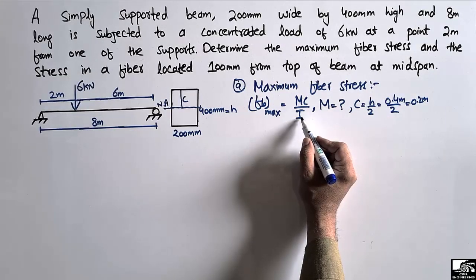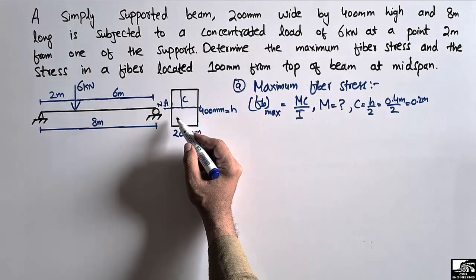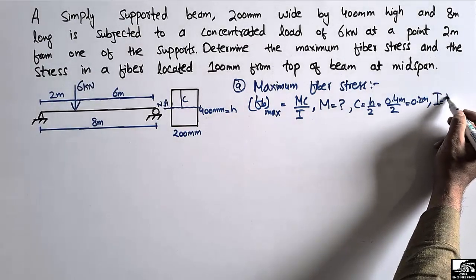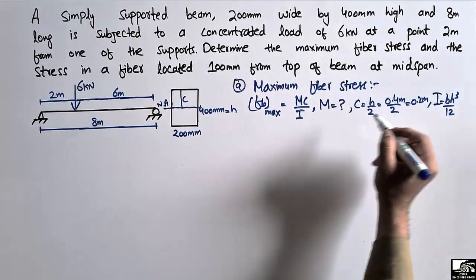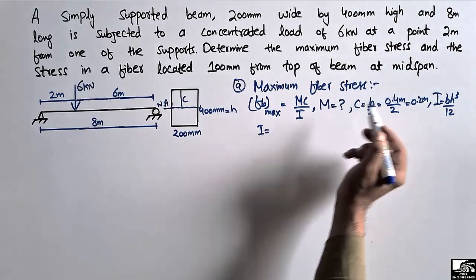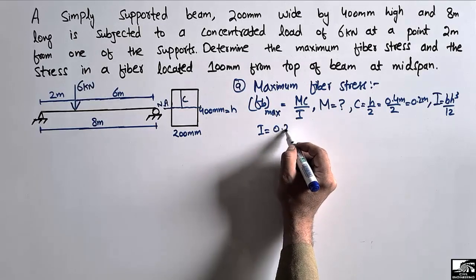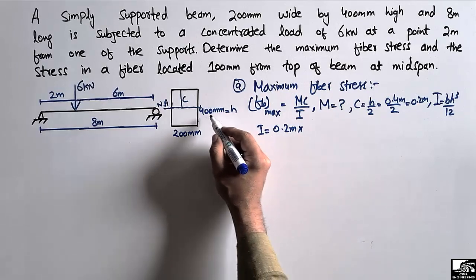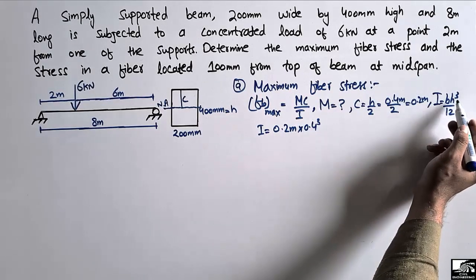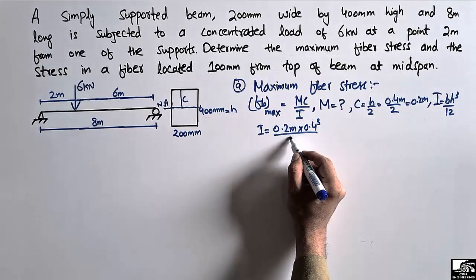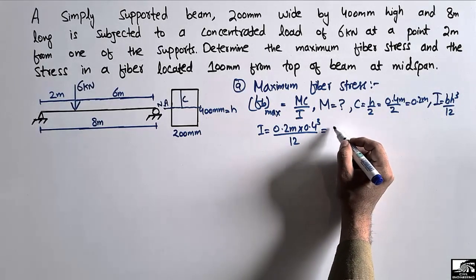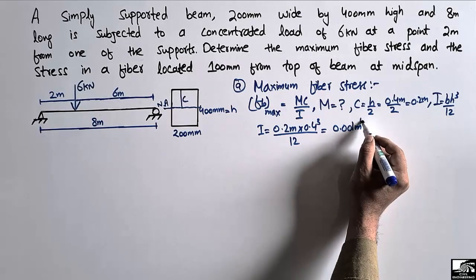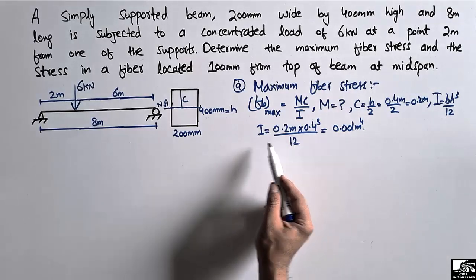I is the moment of inertia for this rectangular beam, calculated as I = bh³/12. With b = 0.2 meter and h = 0.4 meter, I equals 0.2 multiplied by 0.4 cubed divided by 12, giving a moment of inertia equal to 0.001 meter to the power 4.